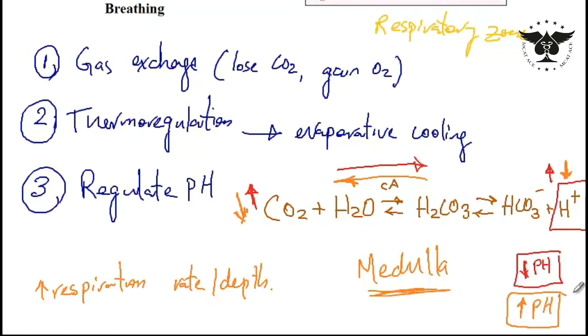So another function of the respiratory system is regulating pH by adjusting the CO2 concentration of our blood and the system that is responsible for regulating the breathing rate is the medulla that is located in our brain.